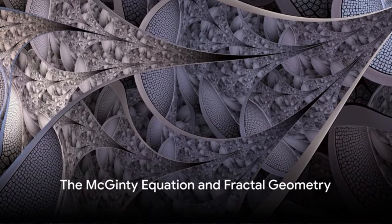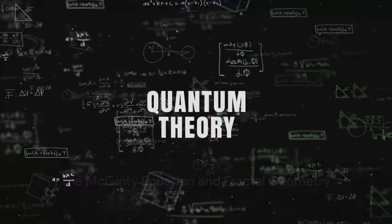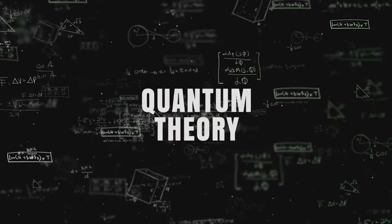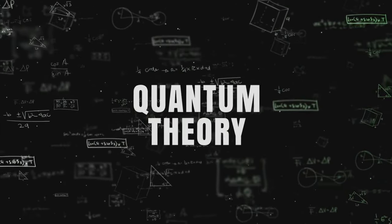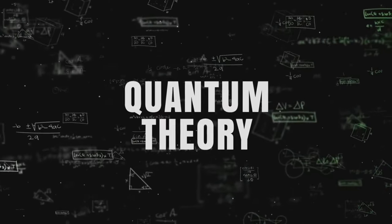Our journey begins with the McGinty equation. This revolutionary equation reshaped quantum field theory by introducing the idea of fractal geometry. Picture quantum fields not as smooth, uniform spaces, but as intricate tapestries of self-similar patterns changing with scale. This concept led to the addition of a fractal correction term in the quantum field, accounting for the effects of the fractal potential.